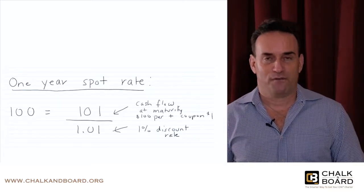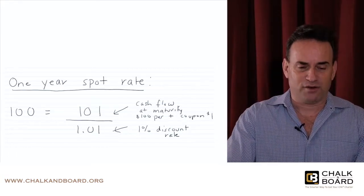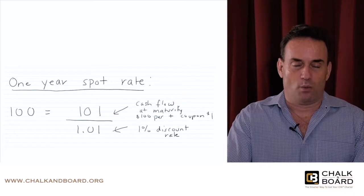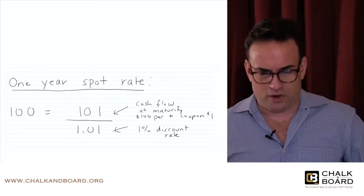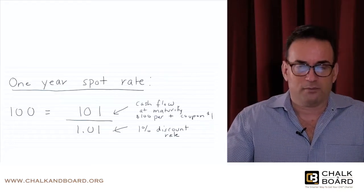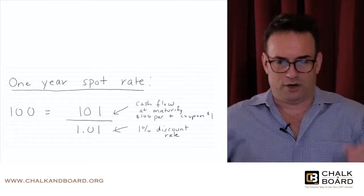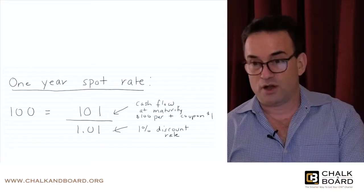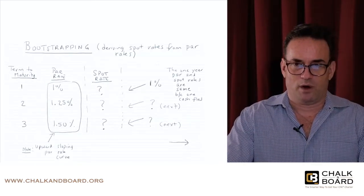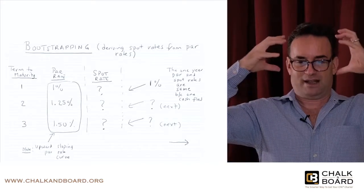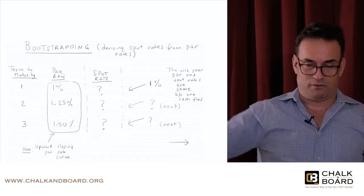The answer is 1%. Taking 101 divided by (1 + X) to the first equals 100, solving for X gives 1%. So the one-year spot rate is 1%. We need to retain that spot rate because we'll use it to discount subsequent cash flows as we derive the rest of the spot rate curve.